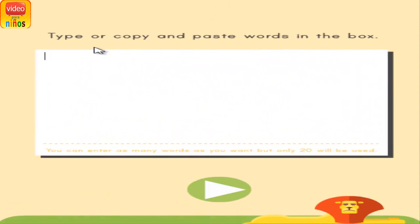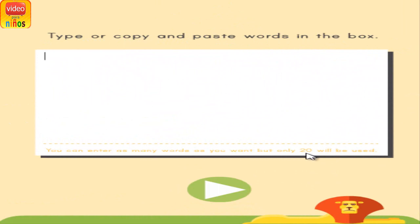Type or copy and paste any words you'd like to use into the box below. You can enter as many words as you'd like, but only 20 randomly selected words will be used. When you're ready, click the play button.